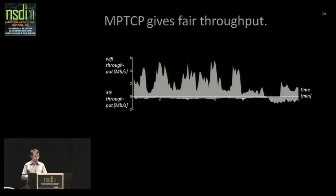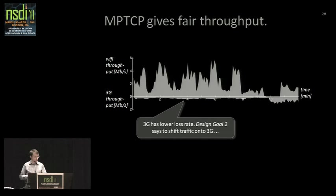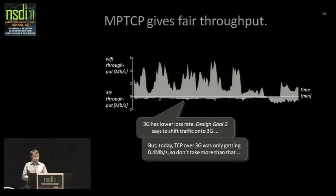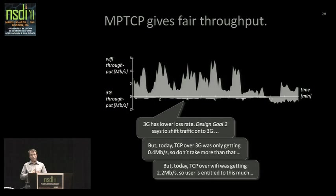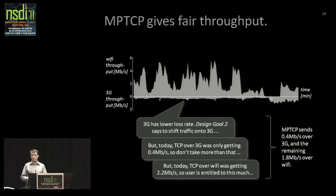Let me talk through the fairness goals in this scenario. Design goal two says he should shift all his traffic onto the 3G path because it has lower loss. But the fairness goal says you're not allowed to take more than 0.4 megabits per second on the 3G path — that's what TCP would get there. On the other hand, if he used only the Wi-Fi path, he would have gotten 2.2 megabits per second. So our algorithm says this user is entitled to 2.2 megabits per second, put as much as we can on 3G, and put the remaining 1.8 megabits per second over Wi-Fi.